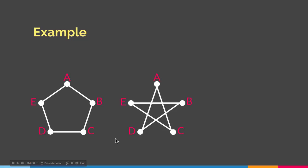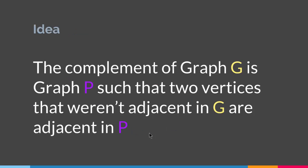We have the concept of complement in different parts of mathematics, especially in set theory, where the complement of a set is everything that is not in that particular set. In graph theory, the complement of a particular graph is a graph with the same vertices but with different adjacencies. So the complement of graph G is graph P such that two vertices that were not adjacent in G are adjacent in P — where adjacent means two vertices connected by an edge.